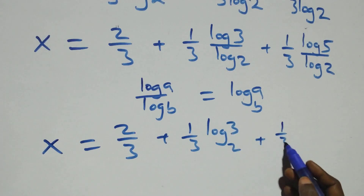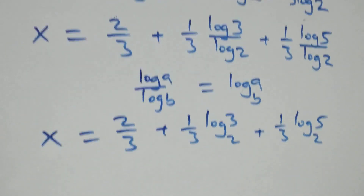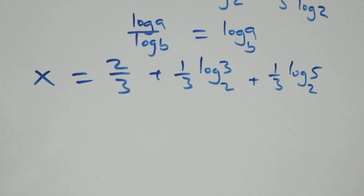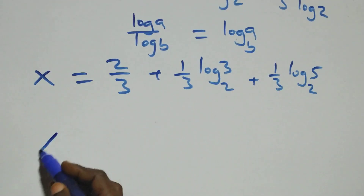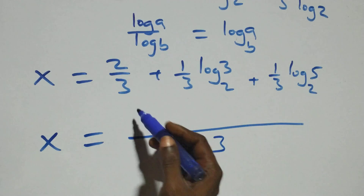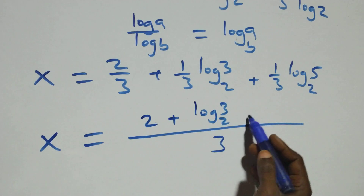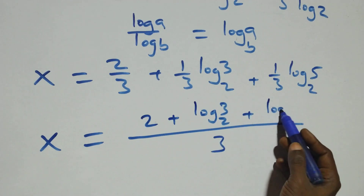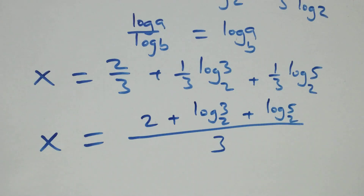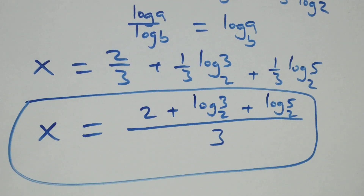That is, all we have becomes x equals to two over three, plus one over three log three base two, plus one over three log five base two. Next step, we bring this together as one fraction: x equals to two plus log three base two plus log five base two, all over three.